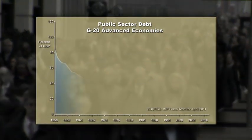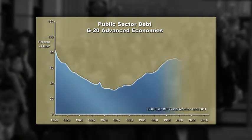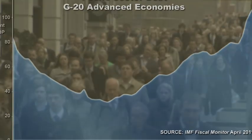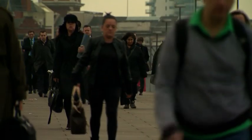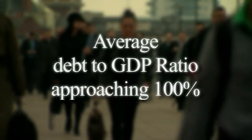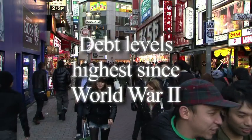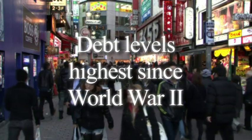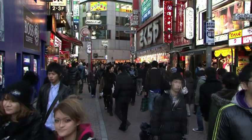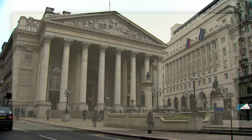The global financial crisis has caused government debt to soar in advanced economies. Public concern is rising and a debate rages on how to fix the problem. For the advanced economies, the average debt to GDP ratio is now approaching 100%. Debt levels are now higher than at any time since World War II and are set to keep rising. In many countries, the required fiscal adjustment is historically unprecedented.